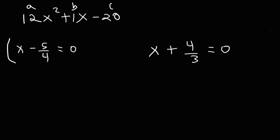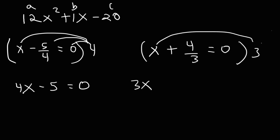Now, we need to get rid of the fractions. So for this one, I'm going to multiply everything by 4. x times 4 is 4x. Negative 5 over 4 times 4, the 4s will cancel, giving us negative 5. And 0 times 4 is 0. Now, for this one, multiply everything by 3 to get rid of the fraction. So this is going to be 3x, 4 over 3 times 3. The 3s will cancel, giving us 4. And 0 times 3 is 0. So our answer is going to be 4x minus 5 times 3x plus 4.